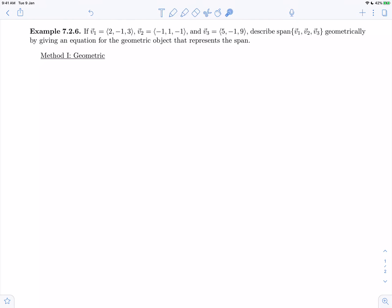Hey, thanks for joining me for example 7.2.6, part of section 7.21 on spans. This example gives us vectors v1, v2, and v3, and asks us to describe the span of these vectors geometrically by giving an equation for the geometric object that represents the span.